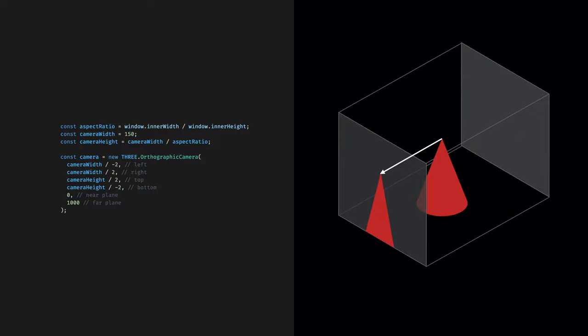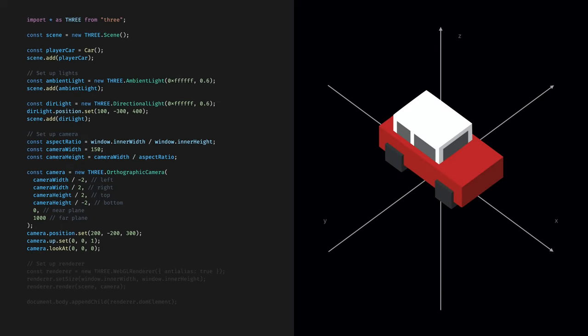Then there's the orthographic camera that we are actually going to use. Here we are not projecting things towards a single point, but towards the surface. Each projection line is in parallel — that's why it doesn't matter how far objects are from the camera, and that's why it doesn't distort the geometries. For an orthographic camera, we have to define how far each plane is from the viewpoint. We define that the left plane is 75 units away to the left, the right plane is 75 units away to the right, and so on. Here these units don't represent screen pixels — there's going to be a later setting where we display the rendered scene in the browser, and these values have an arbitrary unit that we will use in the 3D space.